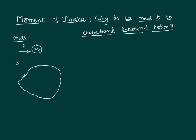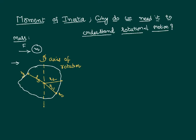Let us say this is the mass we want to rotate about this axis — this is called the axis of rotation, the axis about which the body is rotating. The body particles are distributed over the entire body at different locations and different distances. Let this particle of mass m1 be at a distance r1, this particle at a distance r2, and another particle m3 at a distance r3.